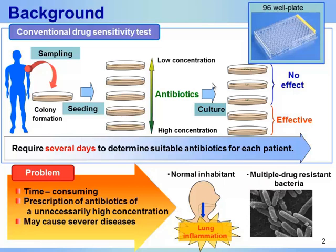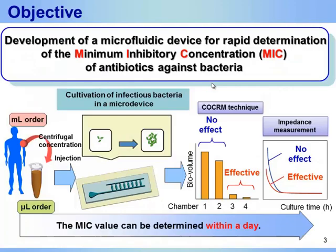Therefore, it is necessary to increase the cell density to a detectable level by forming colonies on a well plate. However, this test is very time consuming and the delay of prescription may result in serious diseases such as lung inflammation and the emergence of multiple drug resistance bacteria. Therefore, the shortening of the pre-incubation time is critical for a rapid drug sensitivity test. The objective of this study was to develop a micro-device for rapid determination of the minimum inhibitory concentration of antibiotics against bacteria.